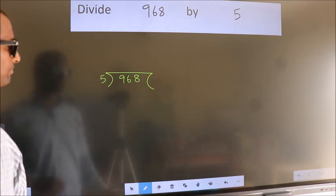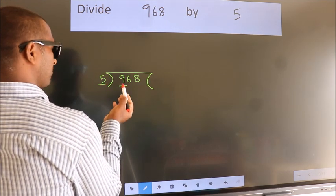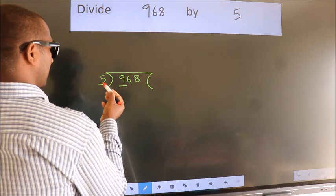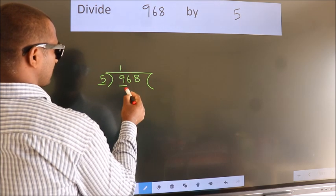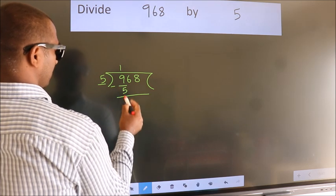Next, here we have 9, here 5. A number close to 9 in 5 table is 5 once 5. Now, we should subtract. We get 4.